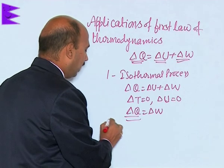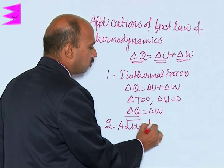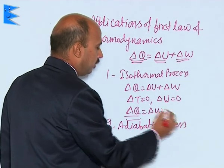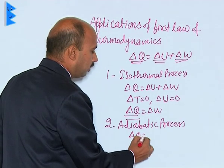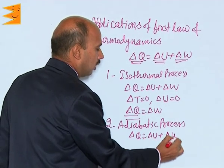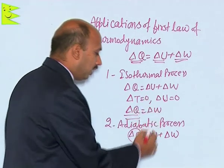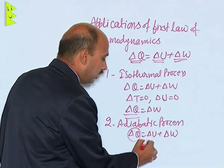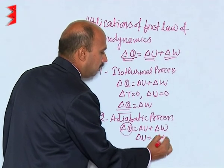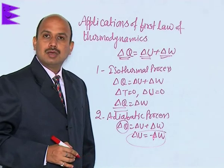The second application is the adiabatic process. In adiabatic process, delta Q is equal to delta U plus delta W, but delta Q is equal to 0. So we can write delta U is equal to minus delta W. That is the result in case of the adiabatic process.